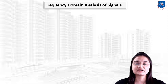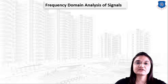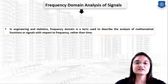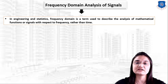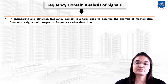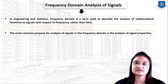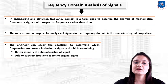Frequency domain analysis means the analysis of a signal in the frequency domain. In previous lectures we studied the analysis of signals in the time domain. In engineering and statistics, frequency domain is a term used to describe the analysis of mathematical functions or signals with respect to frequency rather than time. The most common purpose is the analysis of signal properties, and the engineer can study the spectrum to determine which frequencies are present in the input signal.